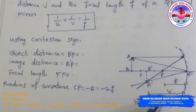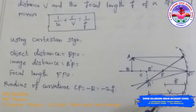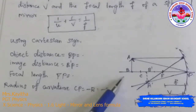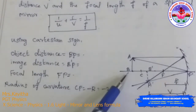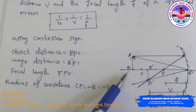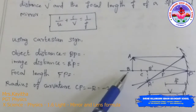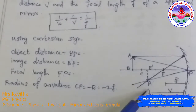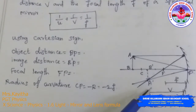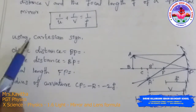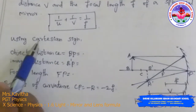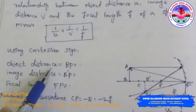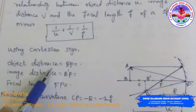Consider an object AB placed on the principal axis beyond the centre of curvature of the concave mirror of small aperture. After reflection of light from the mirror, the real and inverted image A'B' is formed. Now we can apply the Cartesian sign convention.